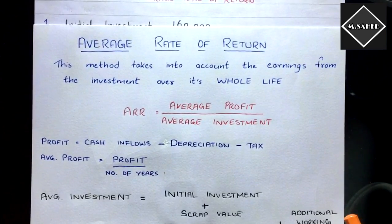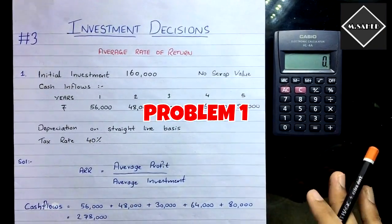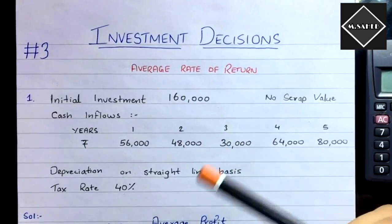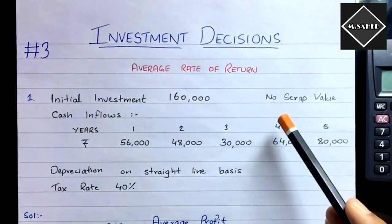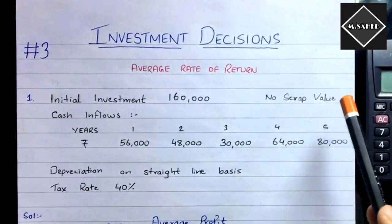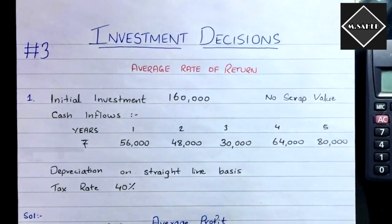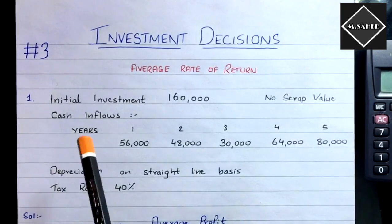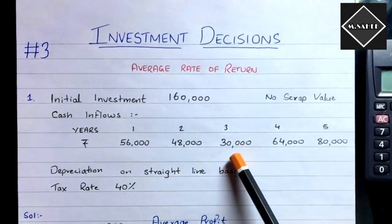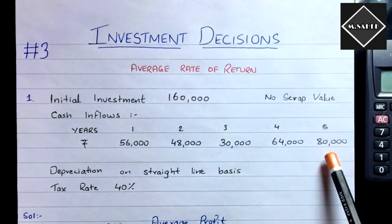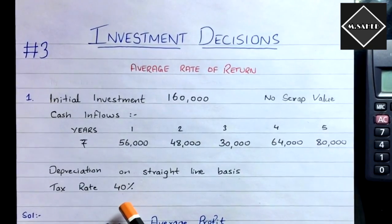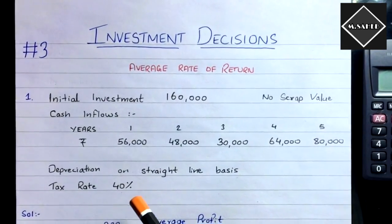Now let's solve a problem. The question states: Initial Investment = 1,60,000; no scrap value. Cash inflows are: Year 1 — 56,000; Year 2 — 48,000; Year 3 — 30,000; Year 4 — 64,000; Year 5 — 80,000. Depreciation is on a straight-line basis and the tax rate is 40%.